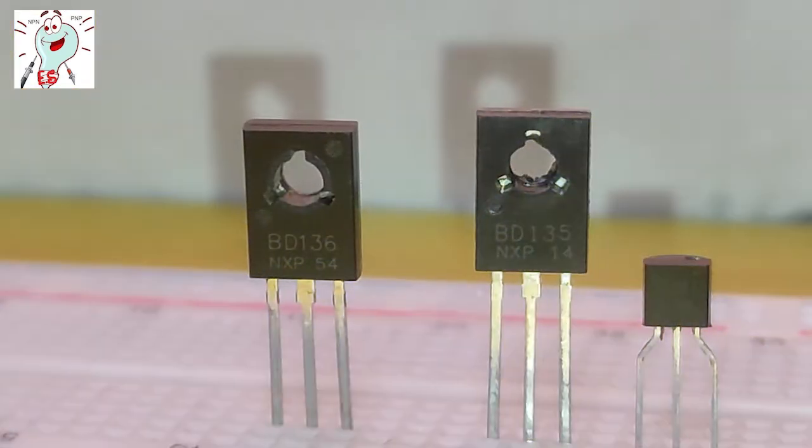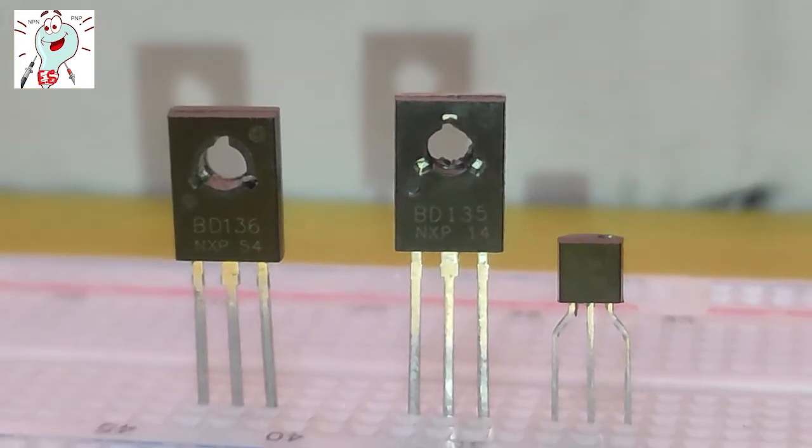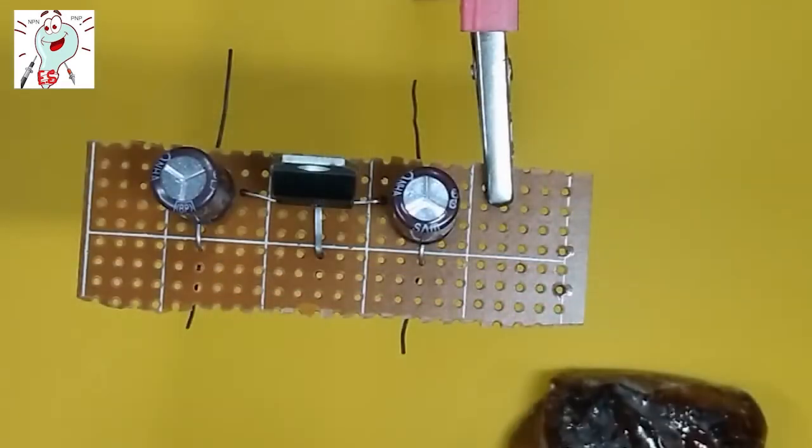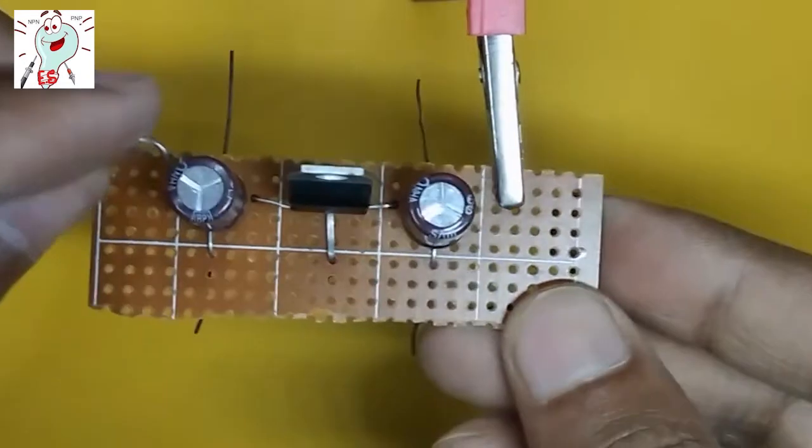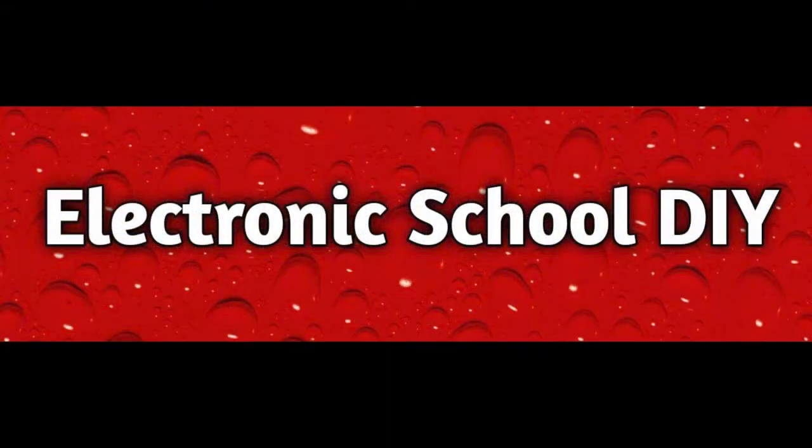So whenever you want to use a BJT in any circuit, check the datasheet. The correct current value will help you make a good circuit.